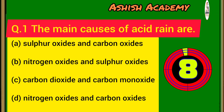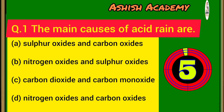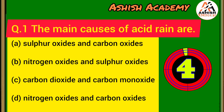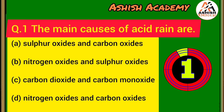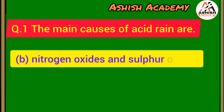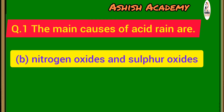Question 1: What are the main causes of acid rain? Correct answer: nitrogen oxide and sulfur oxide.